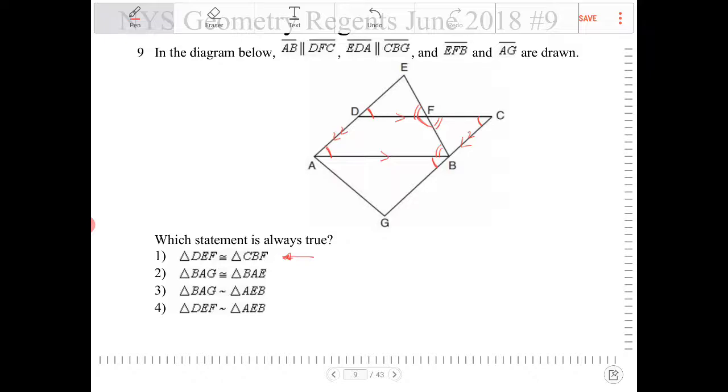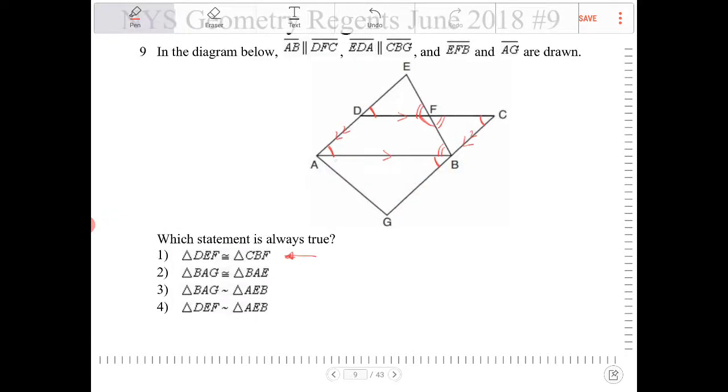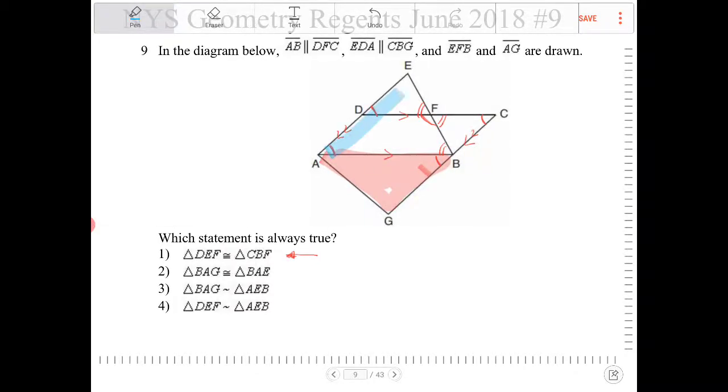Triangle BAG and BAE. So we're talking about the triangle down here versus the triangle directly adjacent and above it. We do not have any information regarding that either. They do share a side, but there's not enough information about their angles. So that's not enough to justify that those two are congruent.